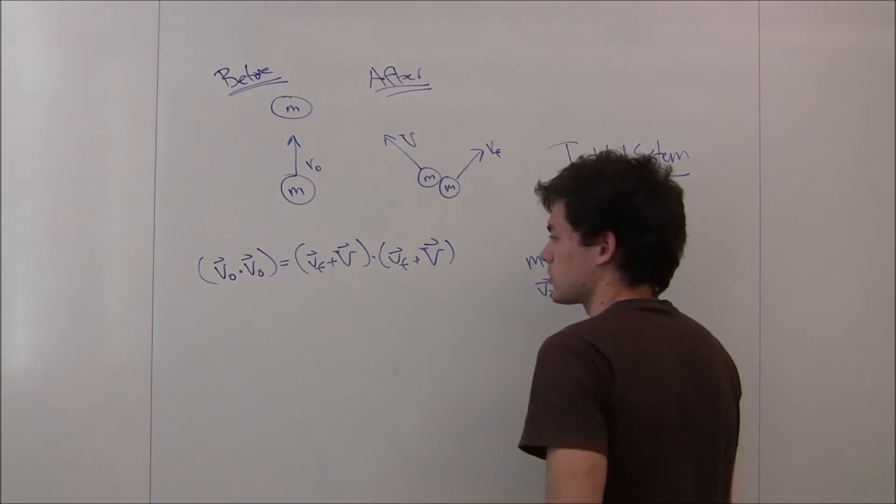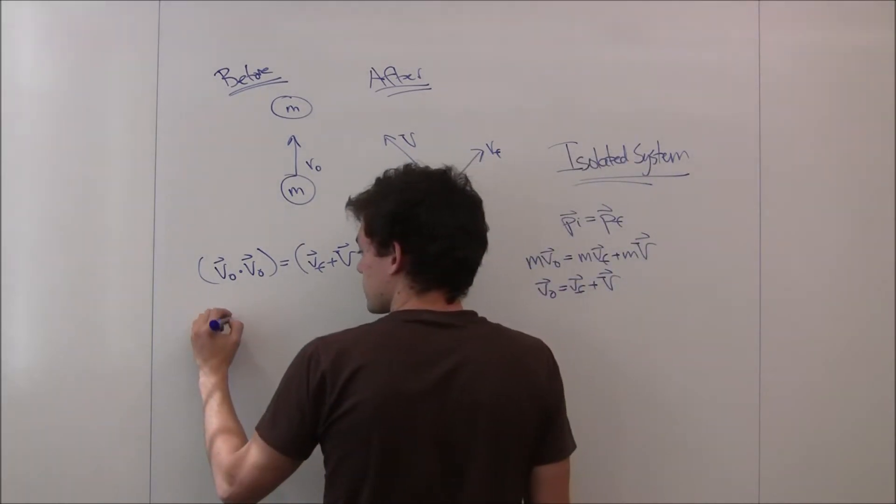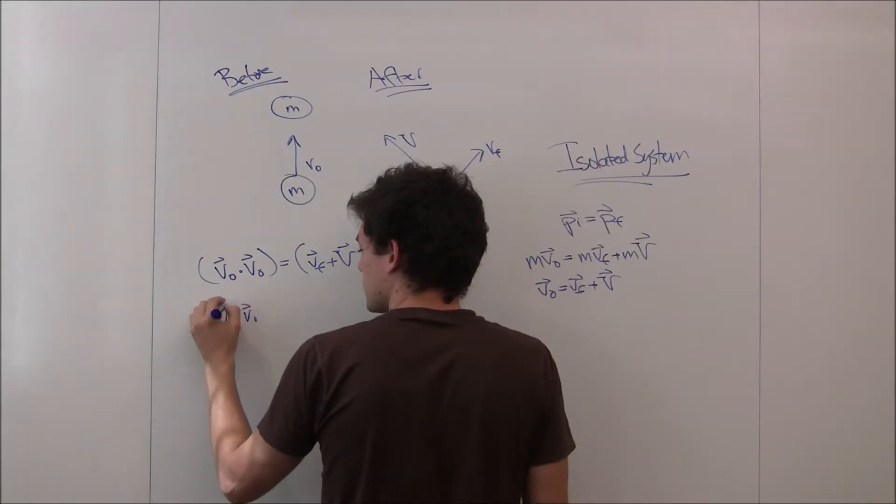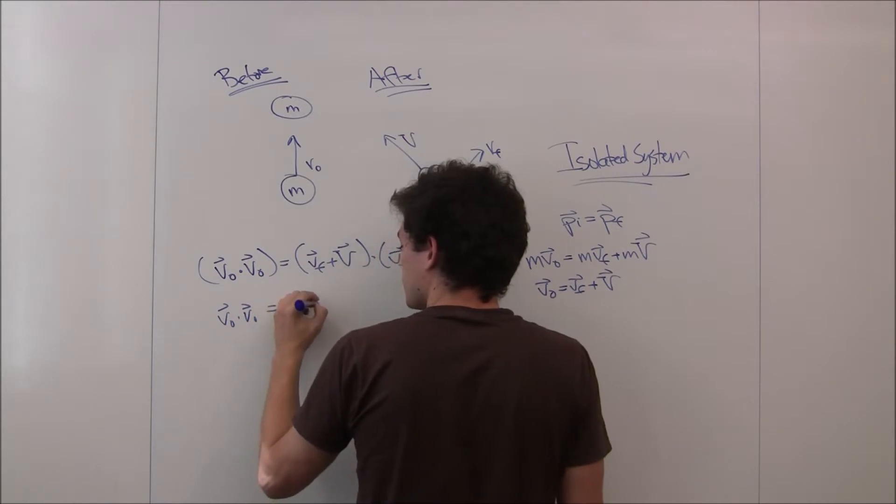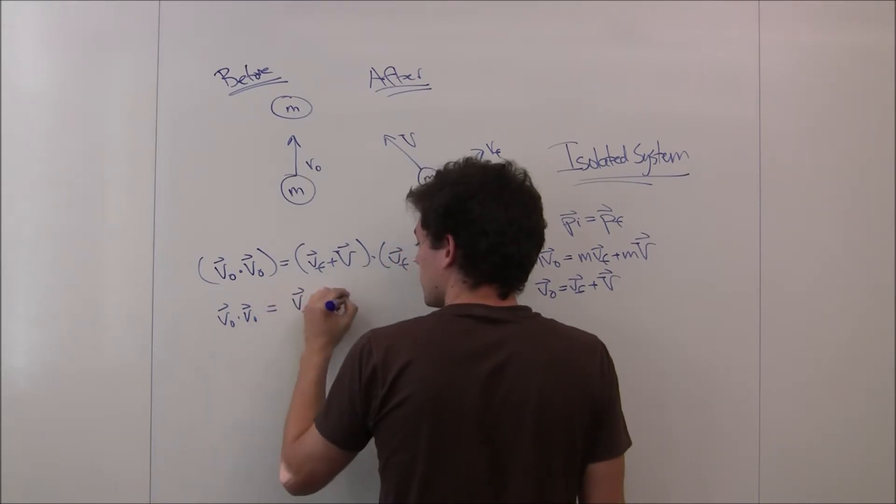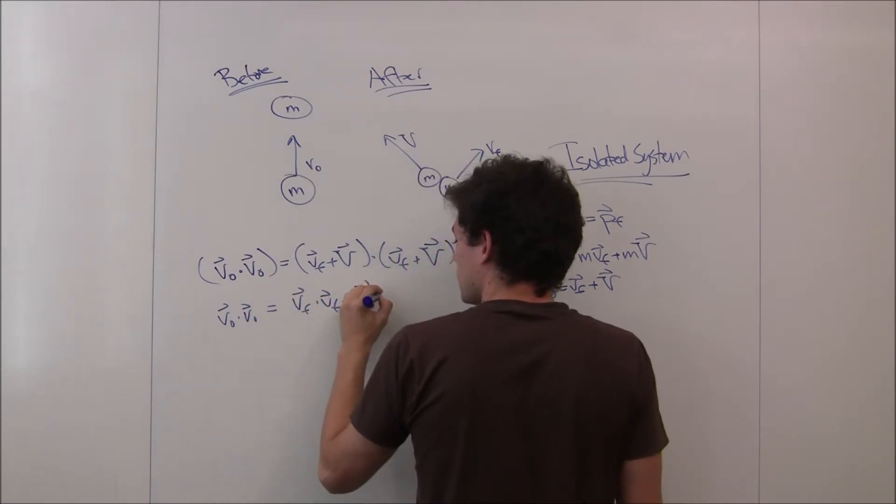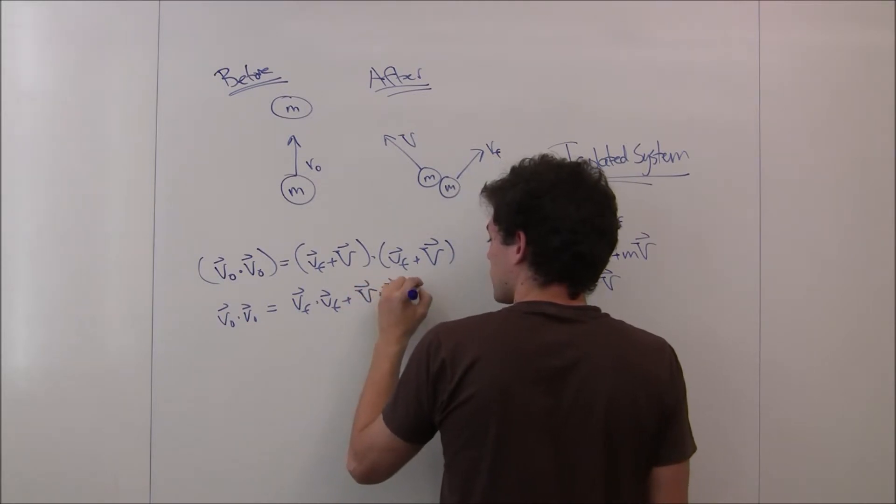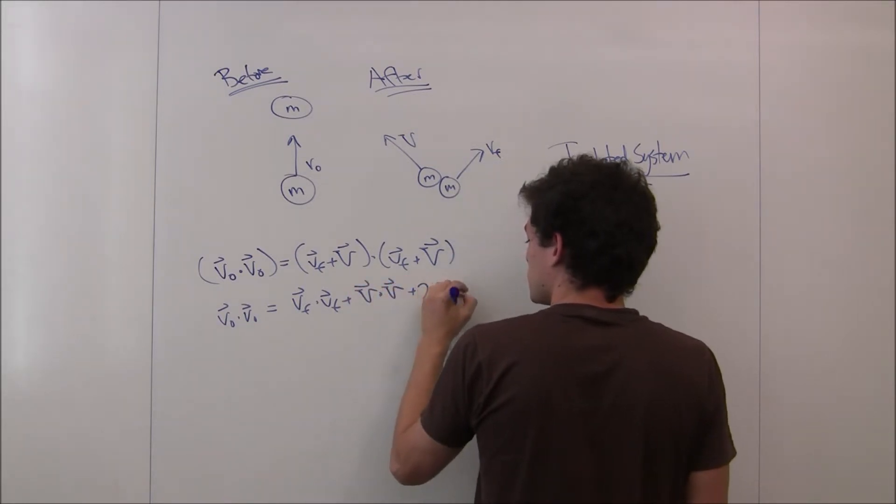And since the dot product can distribute across sums, what this gives us is v0 dot v0 equals v final dot v final plus big V dot big V plus 2 v final dot big V.